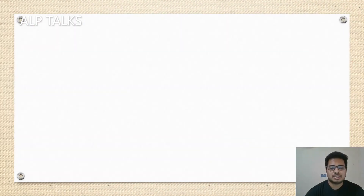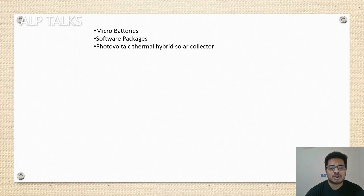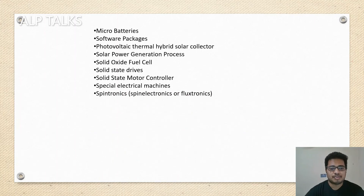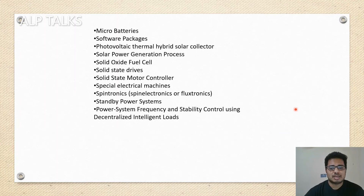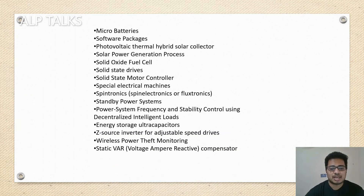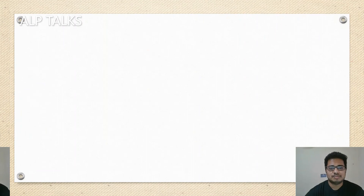Those are some of the technologies in the power system field. Similarly, batteries, microbatteries, software packages, photovoltaic thermal hybrid solar collector, solar power generation process, solid oxide fuel cell, solid state drives, solid state motor control, special electrical machines, spintronics, spin electronics, art flux electronics, standby power systems, power system frequency and stability control using decentralized intelligent loads, energy storage, ultra capacitors — this is going to be one of the most important topics in solar renewable energy and grid stability. Z-source inverter for adjustable speed drives, wireless power theft monitoring, static volt-ampere reactive compensator, Stirling radio stop generator — SRG, and substance reacting grounding system.